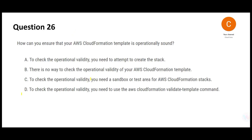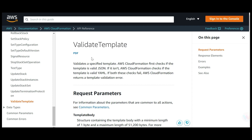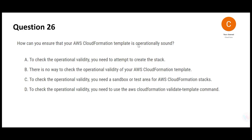Let's go option by option. Option D says: to check operational validity, use the CloudFormation validate-template command. This will only check if the template is a valid JSON or YAML structure — that's it. It will not tell you if it's operationally sound, meaning it won't verify whether running the template will actually create two EC2 instances, two RDS databases, and so on. So D is wrong in this context.